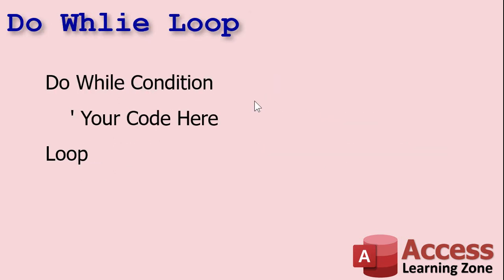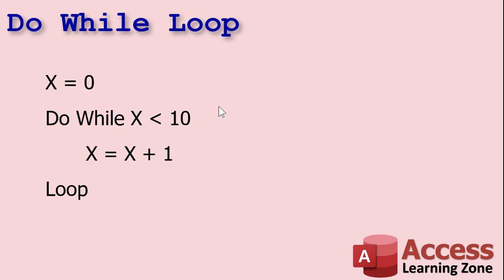DO WHILE is written like this: DO WHILE some condition is true, do your code, and then the word LOOP. For example, if you're dealing with a counter, set X equals zero, DO WHILE X is less than 10, X equals X plus 1, then LOOP. It'll keep doing that — you'll get 0, 1, 2, up to 9, and as soon as it's 10 it'll drop out.